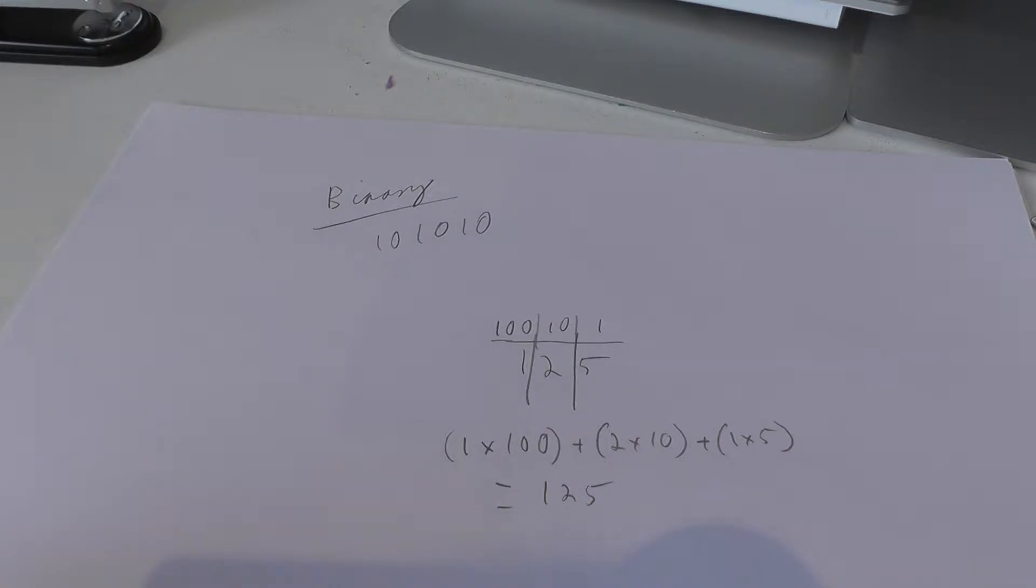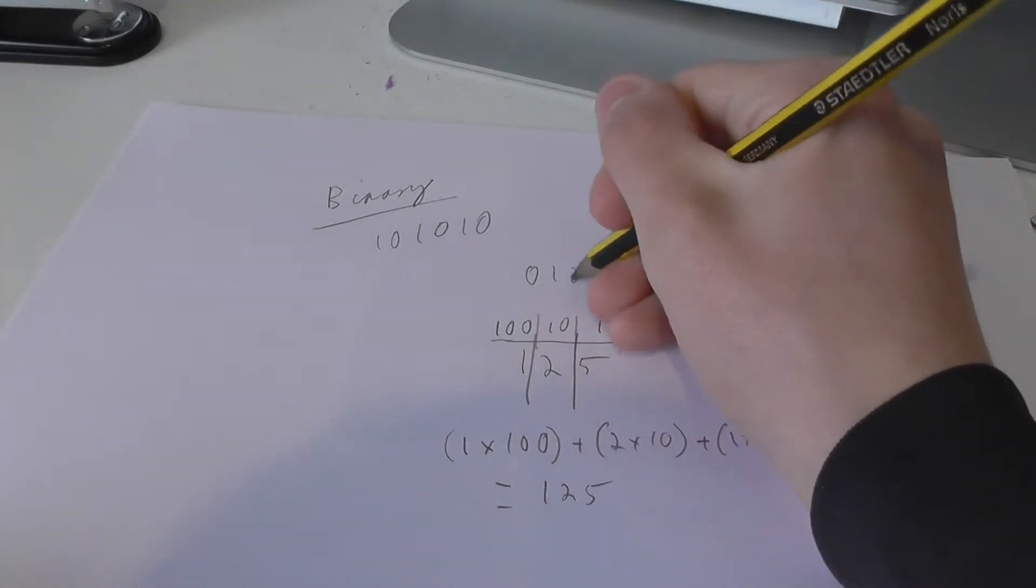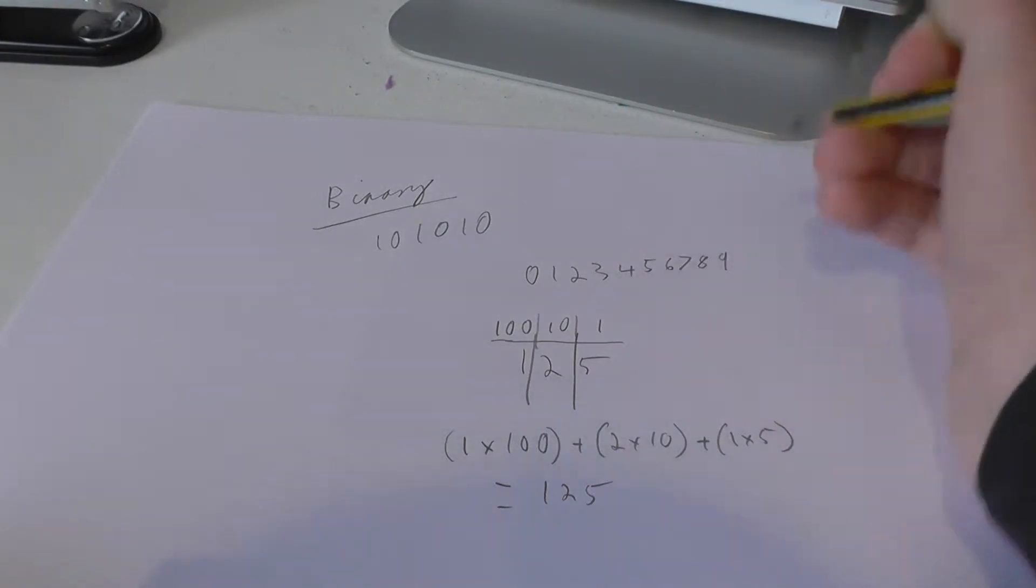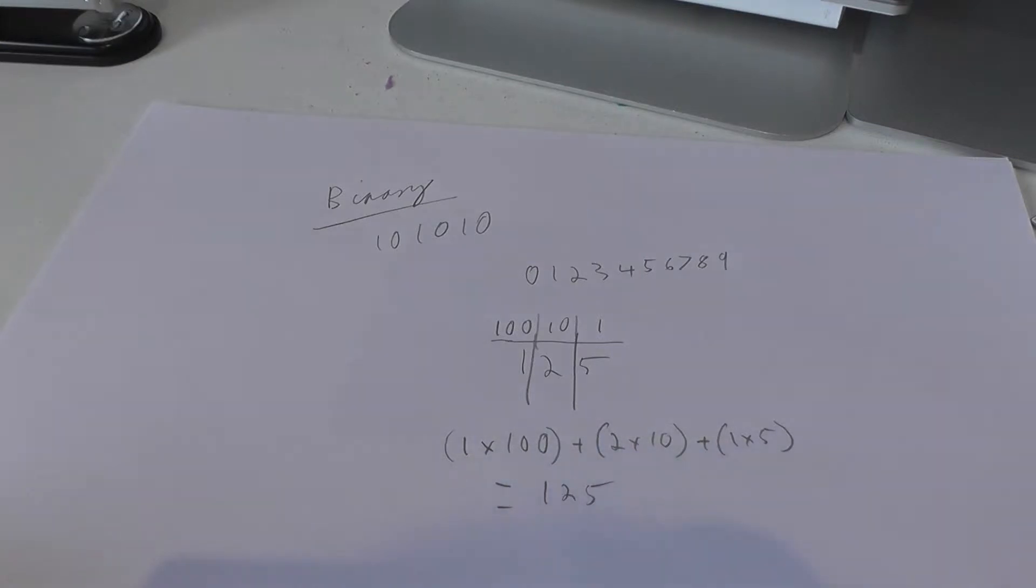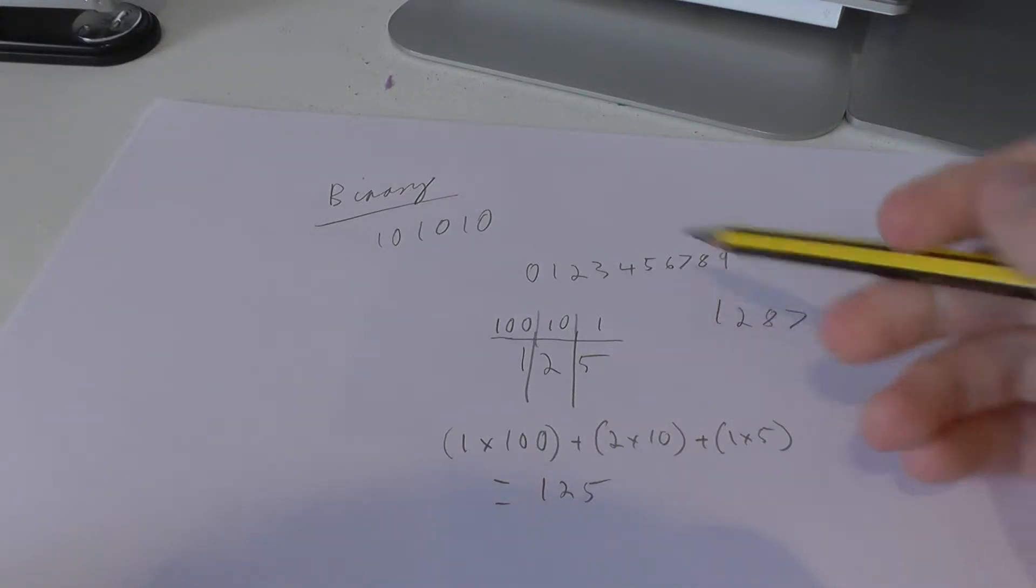It's called base 10 because there are only 10 available numbers, and they are 0, 1, 2, 3, 4, 5, 6, 7, 8, and 9. These are the only 10 numbers that exist in base 10, and you can use those to make any variety of numbers, like 1,287. That is made of the numbers 1, 2, 8, and 7.